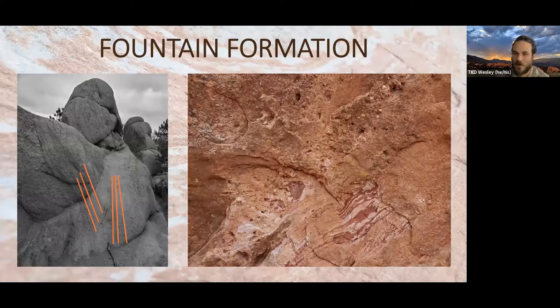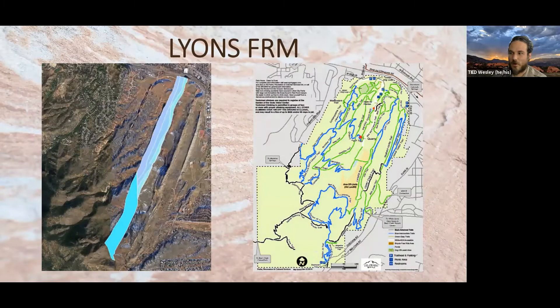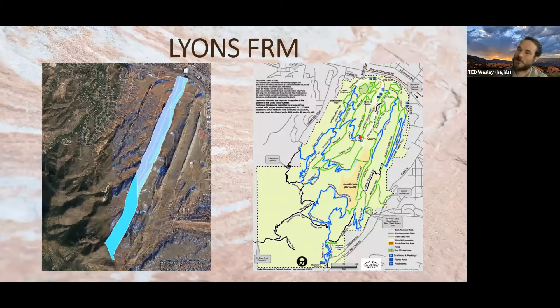That is our Fountain Formation. Next we get to maybe our most famous formation — the Lyons Formation. All of these are named after towns: Fountain is named after Fountain, Colorado; Lyons is named after Lyons, which is near the entrance to Rocky Mountain National Park.